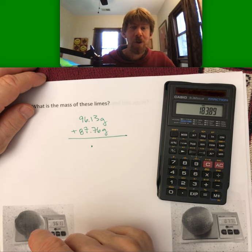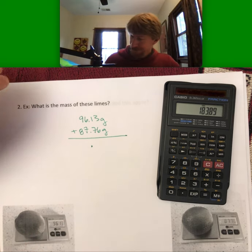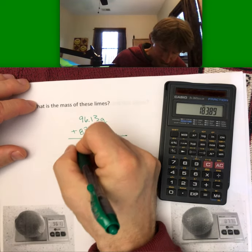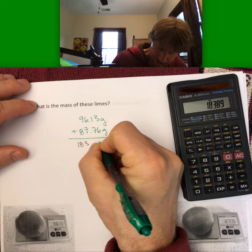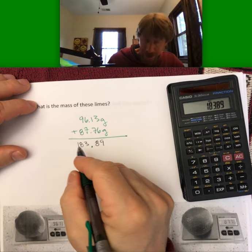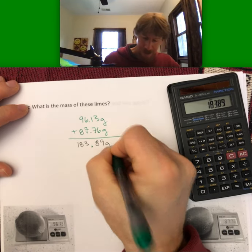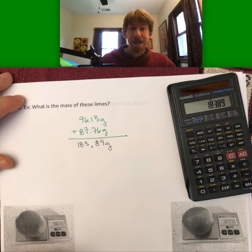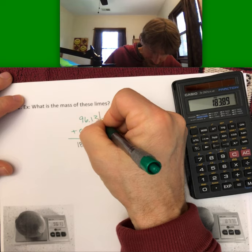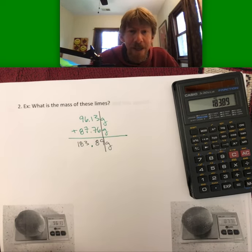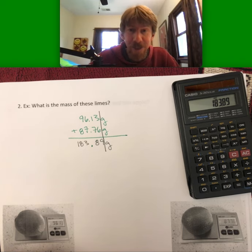So 96.13 plus 87.76. I have a whole folder on my computer called Pictures of Fruits with Scales. 183.89. I always like to look and make sure that I use the calculator correctly, too. All right. Now, my line here, if you draw it, I draw it usually. Both of the numbers have two decimal places. So my final answer has two decimal places.